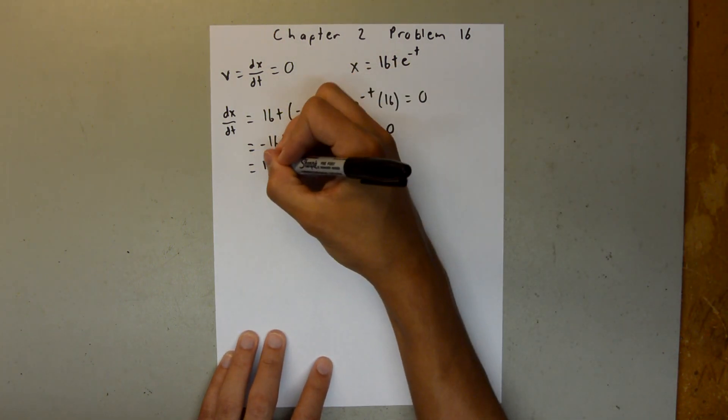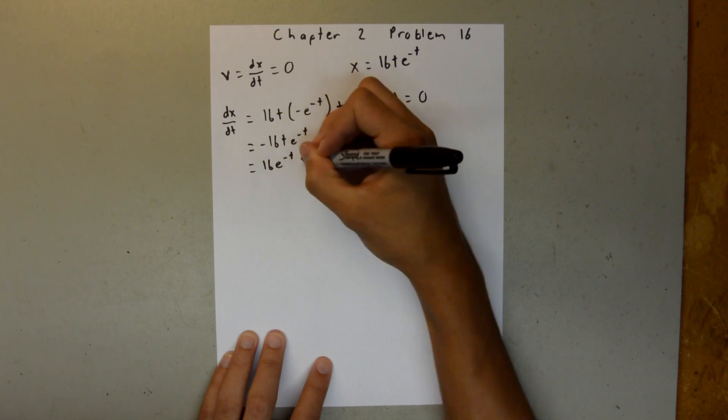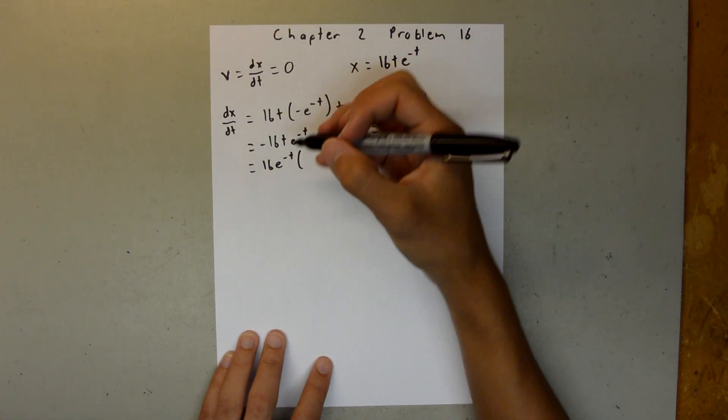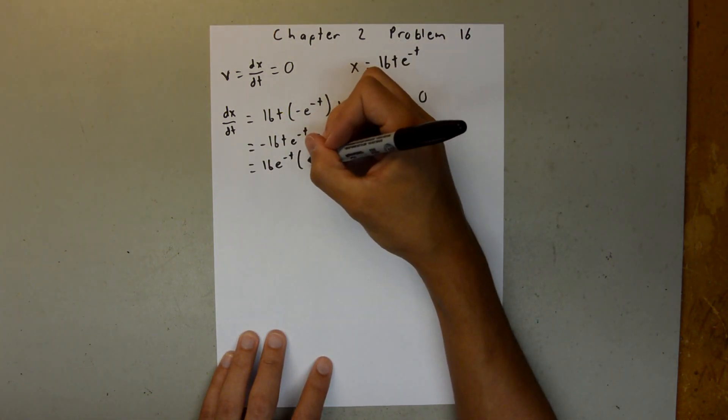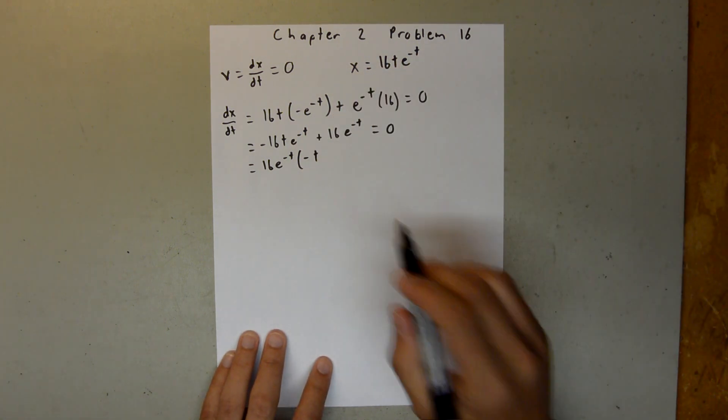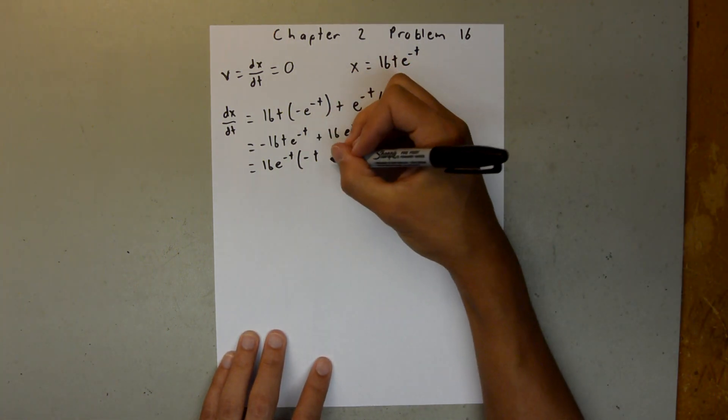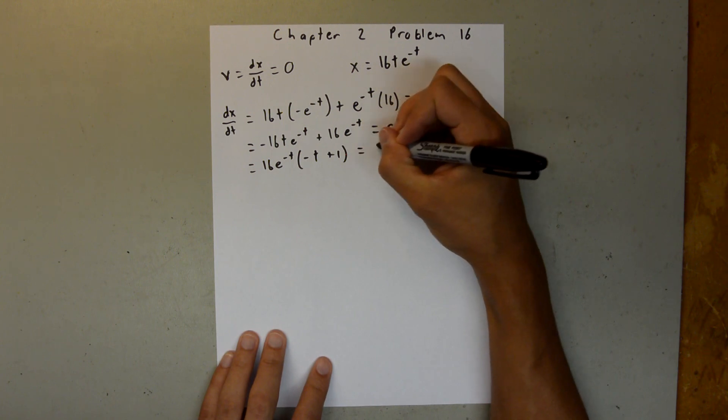And we can say 16e to the negative t, times, and when you take that out of this, you're going to get a negative t. And if you take that out of this, you're going to get 1, so we have a plus 1, and that equals 0.